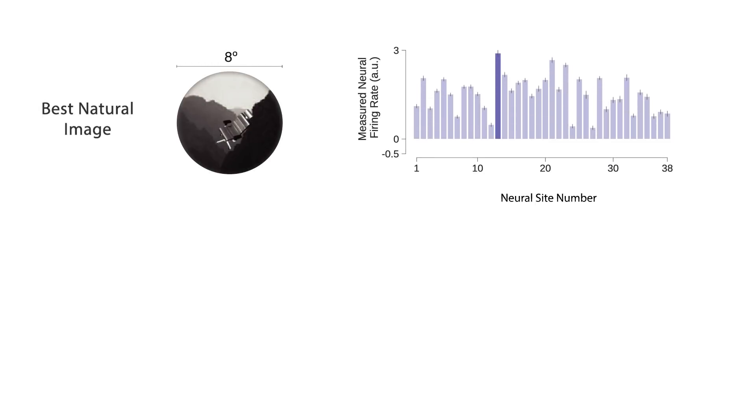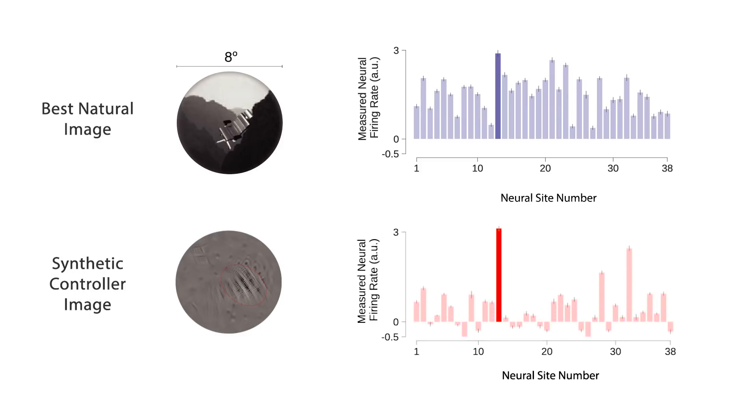The second objective was to see if we could drive a population of neurons to a certain state. In this case we tried to push one neuron to a very high state while keeping the others at a minimally active state. What we found was that in most cases we could successfully drive these populations of neurons to a one-hot state — that is, the target neuron being maximally activated and the other neurons not being activated — much better than what we could achieve by showing natural images.